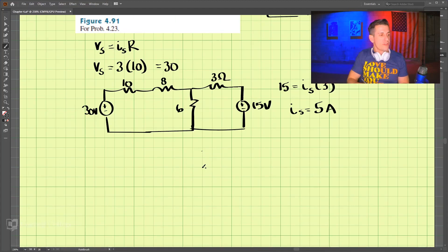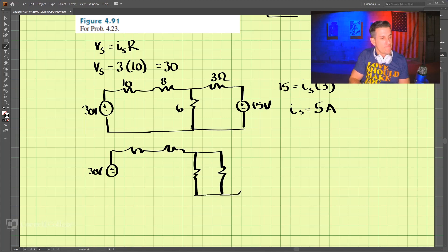Let's redraw the circuit. We have our 30-volt, 10, 8, 6, and 3. Then we have this current source now, which is 5-amps. And this here is 3, this is 6, and we still have our 10 and 8 here.